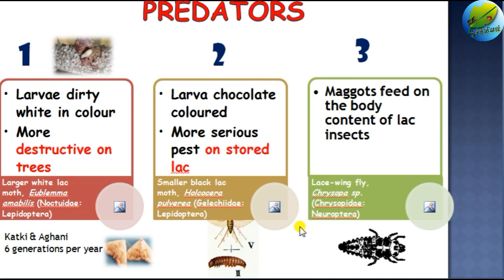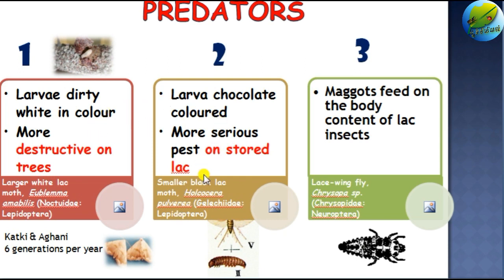The next important pest of lac insects is the lacewing fly. It is one of the major natural enemies in the agricultural crop ecosystem, where it is extensively used to manage sucking pests. But in lac cultivation it is a major pest of lac insects. The immature stage — the grub — is the major feeder on lac insects. They feed on the initial instars of the lac insects rather than tunneling through the lac incrustation, unlike the two moth predators. The ants and lacewing flies only feed on the immature stages before the lac incrustation forms.